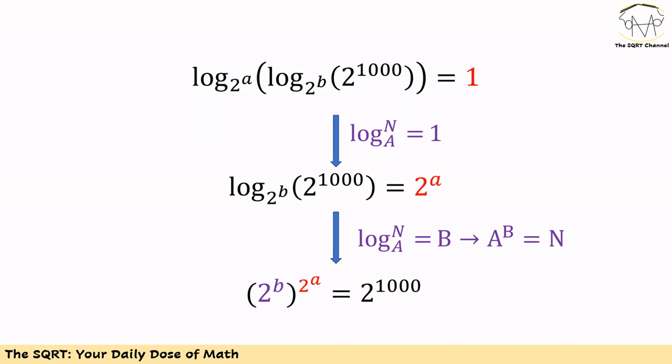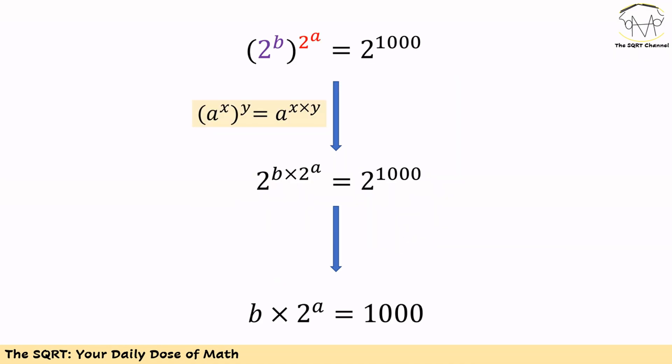Note that we are going to use (2^b)^(2^a) equals 2^1000. Now let's simplify it further. We are going to use the trick that (A^x)^y equals A^(x×y). With that, we can say 2^b to the power of 2^a is actually 2 to the power of b times 2^a, and this should equal 2^1000.